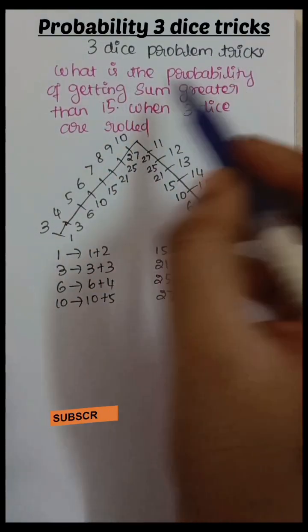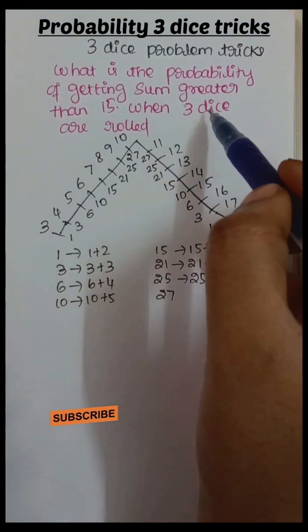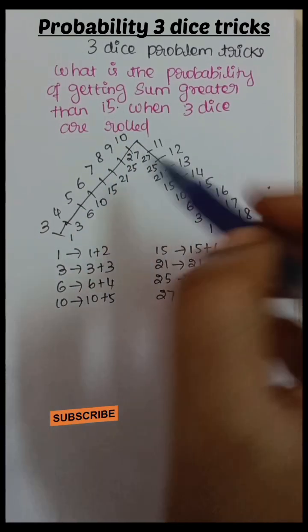3 dice problem tricks. What is the probability of getting sum greater than 15 when 3 dice are rolled? When 3 dice are rolled, remember this triangle.